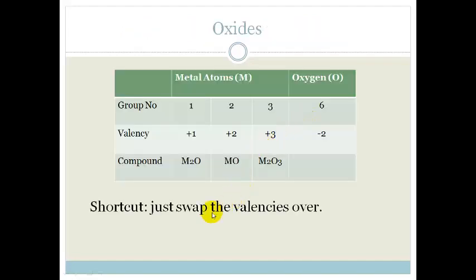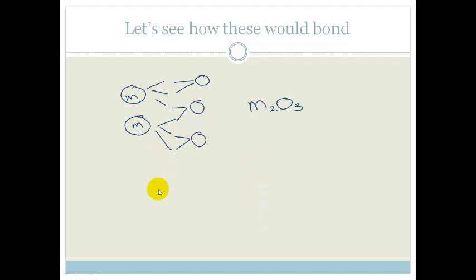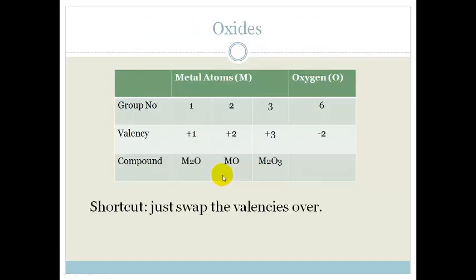So we can fill that in. But there is a shortcut and that is just to swap the valencies over. So if we go back we know that the metal has got 3 plus and the oxygen has got 2 minus. So do you see that we could swap them over and we'd end up with M2O3. And that means that we have now got what we want. And that is a quick way to swap them over.